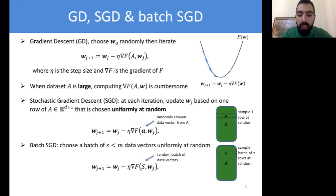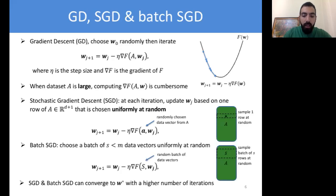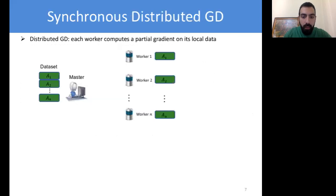It is also possible to relax SGD by taking a subset of uniformly random points at each iteration. This is known as batch SGD, where the subset size at each iteration is s. It has been proven that both SGD and batch SGD can converge to the optimal solution, though they require a higher number of iterations. SGD is the backbone of many machine learning systems nowadays, and for that reason we are interested in techniques that speed up distributed stochastic gradient descent.